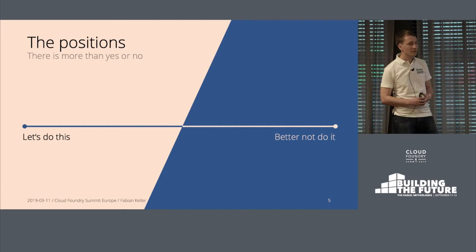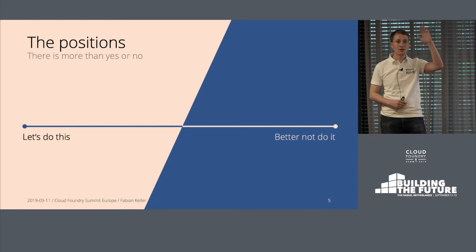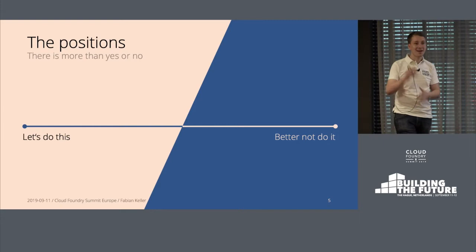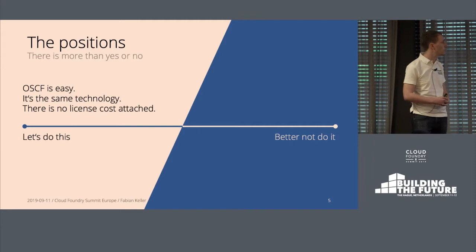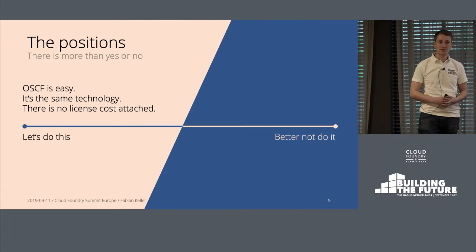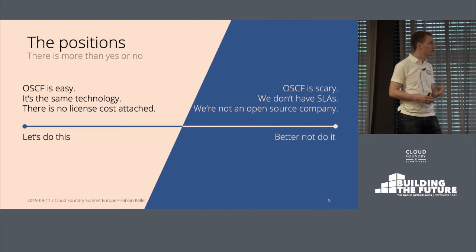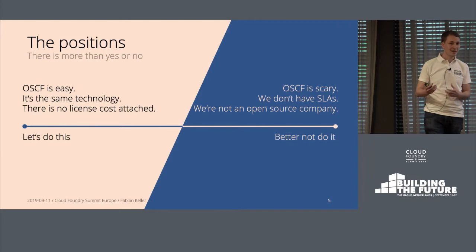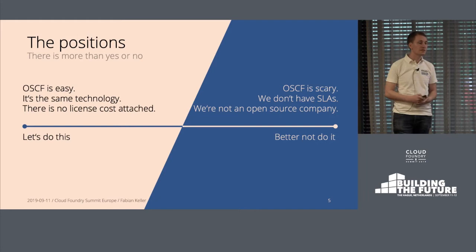Generally speaking there are two sides to this. One side says 'let's do this' and the other says 'let's better not do this.' The 'let's do this' camp says CF is easy, it's basically the same technology, and there's even no license cost — which is pretty cool, but it has a price obviously. On the other side it's more like 'oh, it's really scary, we don't have support' and often 'we're not an open source company, right?' — companies start to get a handle on open source with Cloud Foundry because usually they don't do open source at all.